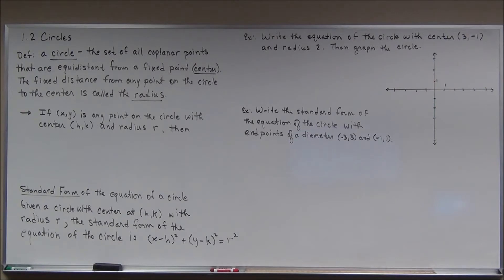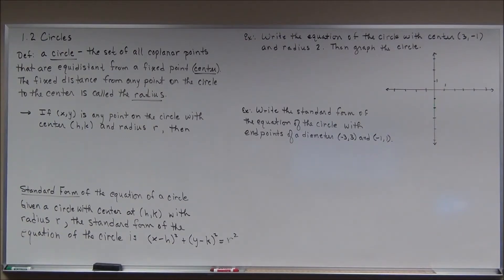We're going to start section two of chapter one on circles. You guys have been dealing with circles since grade school — we're going to do it a little more formally. The circle is a set, or locus, of all coplanar points that are equal distance from a fixed point, which we know is the center. The fixed distance from any point on the circle to the center is called the radius.